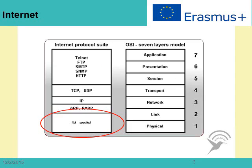Here we see the internet protocol suite compared with the open system interconnection seven layers. The red circle where it says 'not specified' is where we have the technologies that are going to support the IP network, referring to layer one, layer two, and layer two and a half.